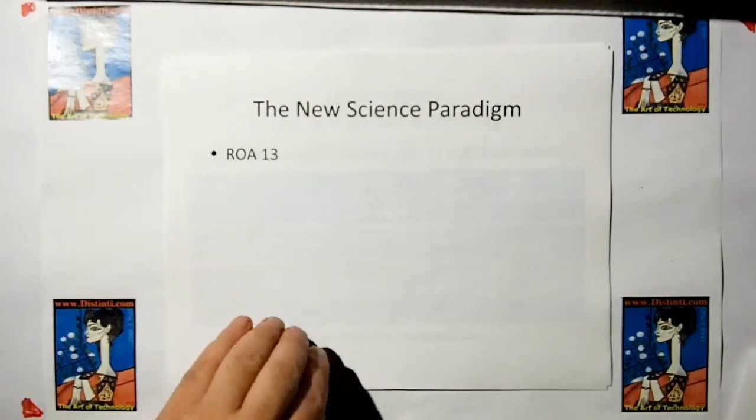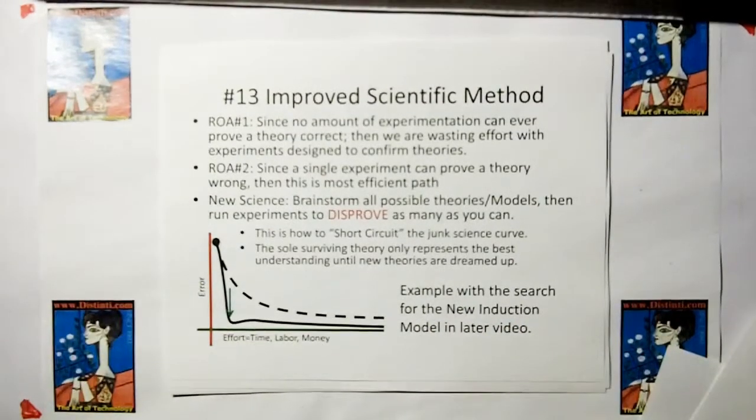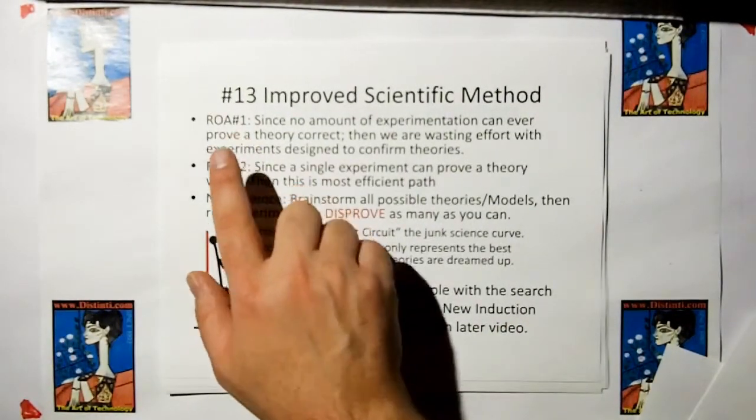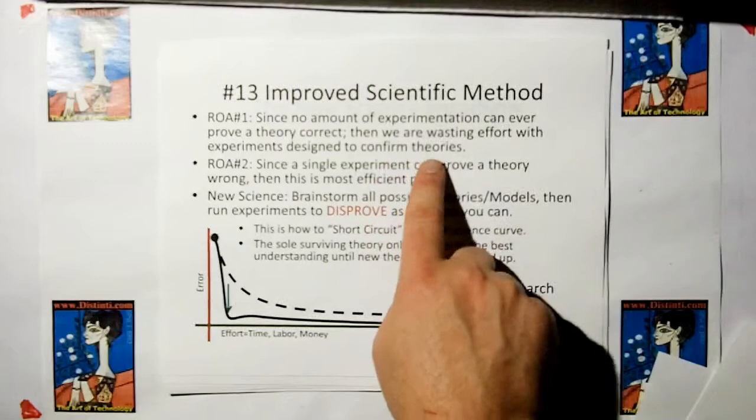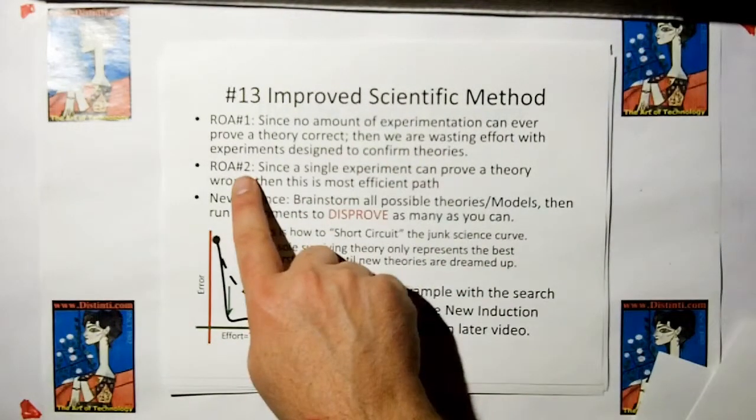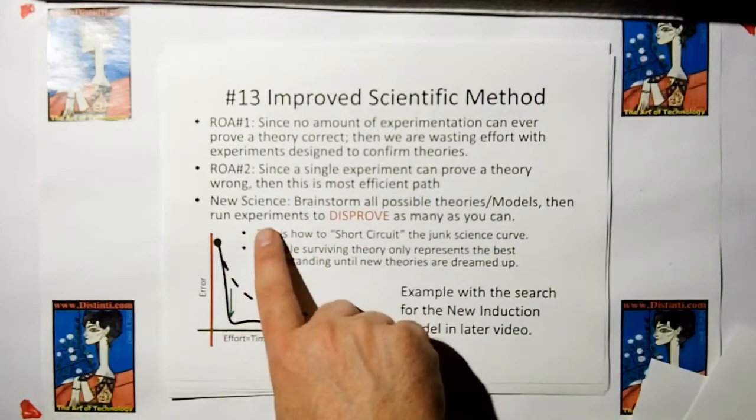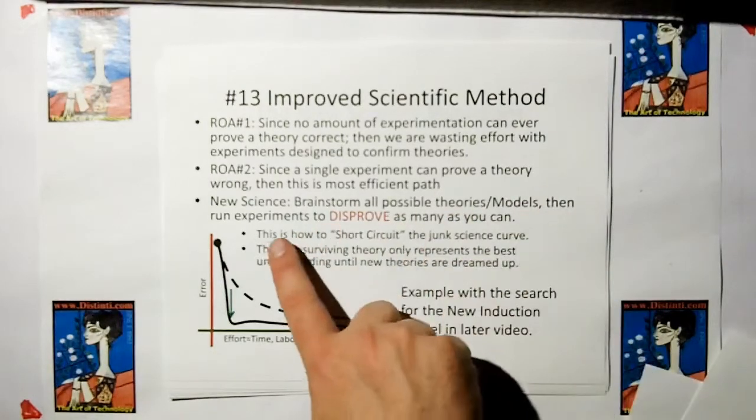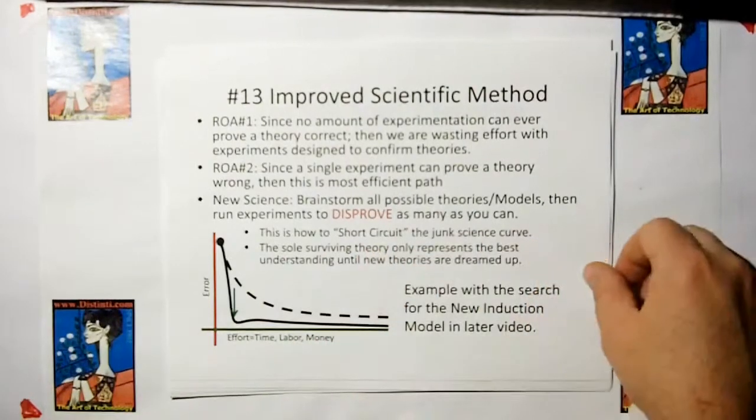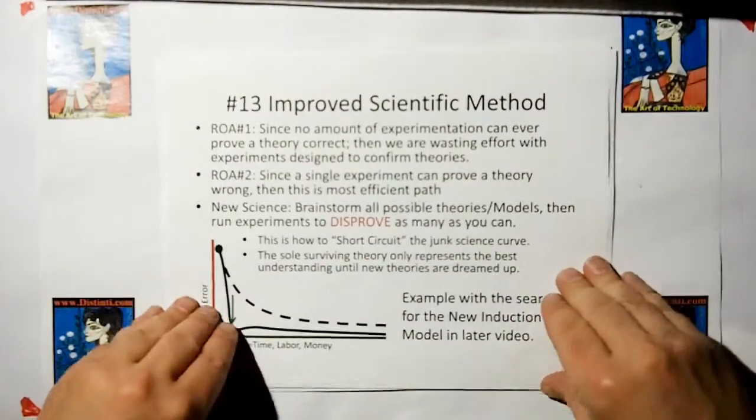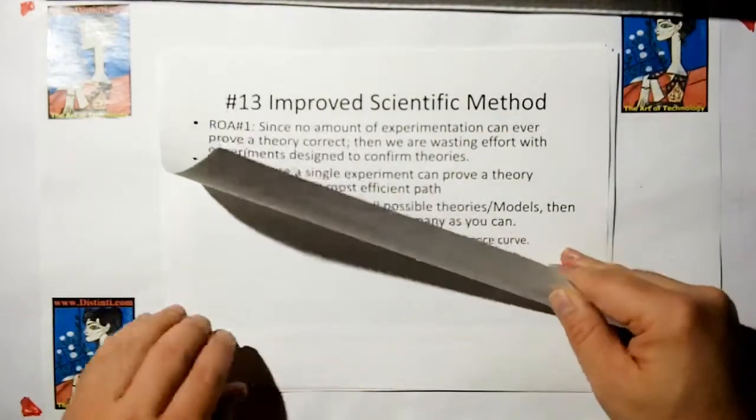Let's talk about the new science paradigm. Rules of Acquisition number 13. Because there is no amount of experimentation that can ever prove a theory correct, we're wasting effort with experiments designed to confirm theories. Since a single experiment can prove a theory wrong, then this is the most efficient path. The new science model is to brainstorm all possible theory models and then run experiments to disprove as many as you can. This is how to short-circuit the junk science curve.